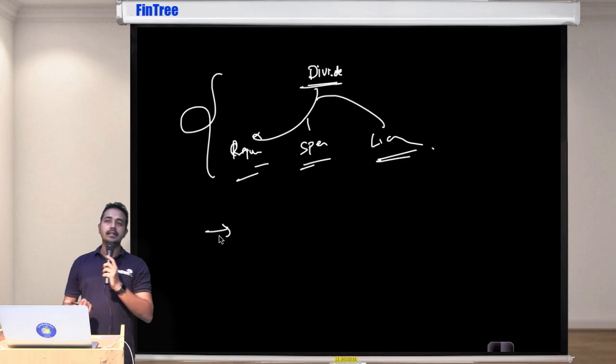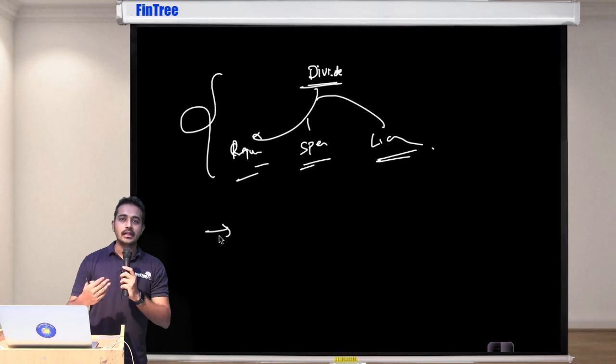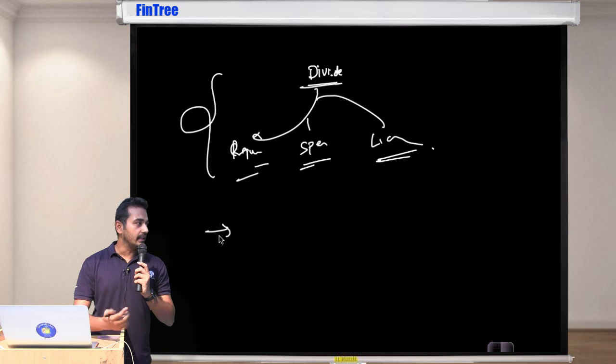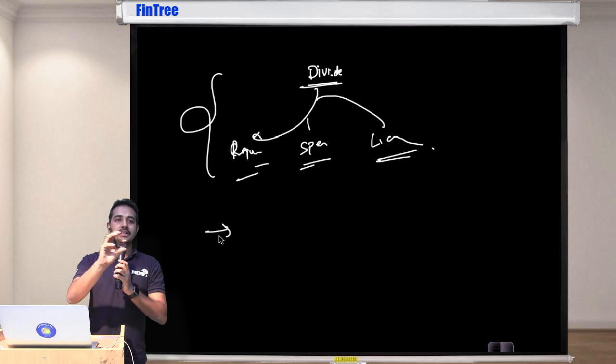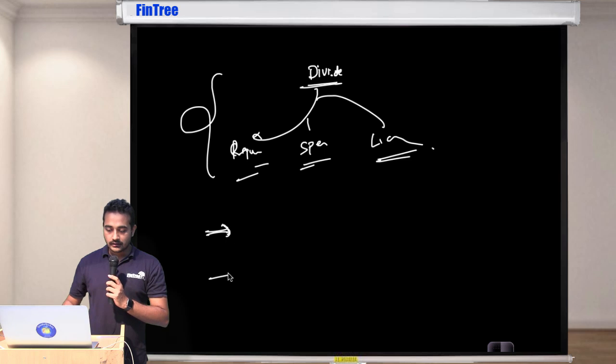Now at level one when we said this we assumed that there were no taxes, but at level two of course and even in practice if you'd see it's not necessary that it works exactly the same way, not necessary that a dividend of five will actually make stock 45 because there's so many other variables which are operating around it. So at level two we kind of go a step closer to what happens in real life, so we'll learn to incorporate impact of taxes on dividend and taxes on capital gains.